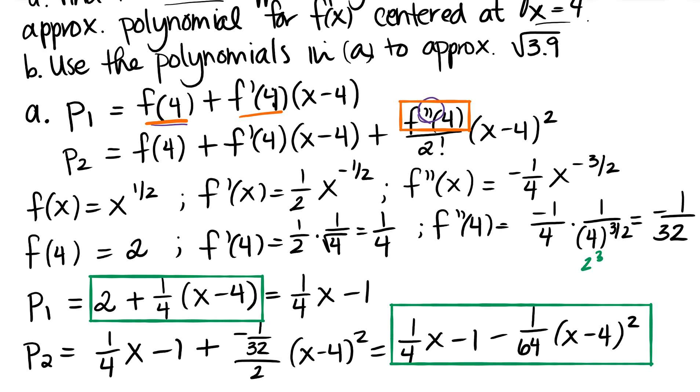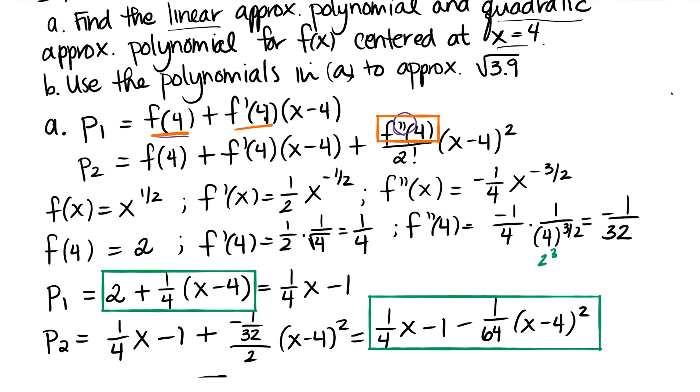So that was part A. Part B: use these polynomials that we found in A to approximate the square root of 3.9. So there was a reason that it was given that our center was at 4, because what that does is it allows the linear and the quadratic approximations to be pretty close as long as we're close to 4.